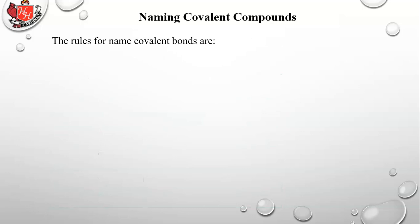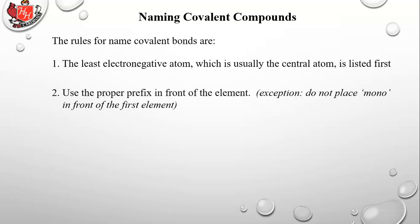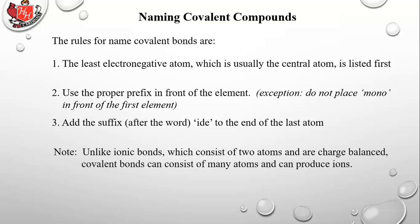The rules for naming covalent compounds are: the least electronegative atom, which is usually the central atom, is listed first. Use the proper prefix in front of the element. Exception: do not place mono in front of the first element. Add the suffix IDE to the end of the last atom. Note: unlike ionic bonds, which consist of two atoms and are charge balanced, covalent bonds can consist of many atoms and can produce ions.